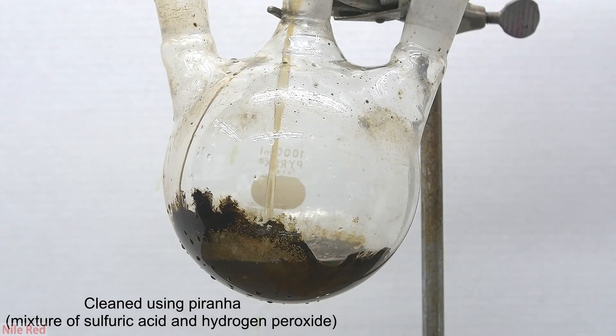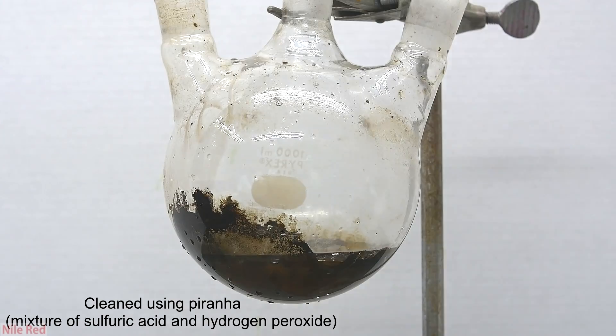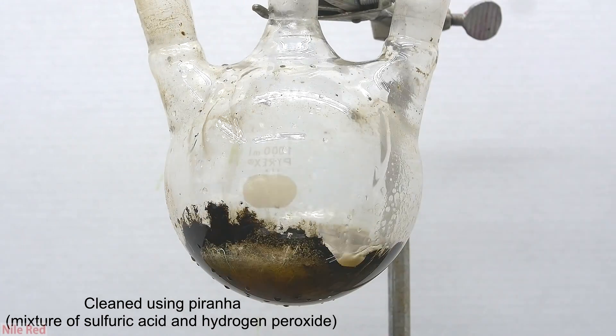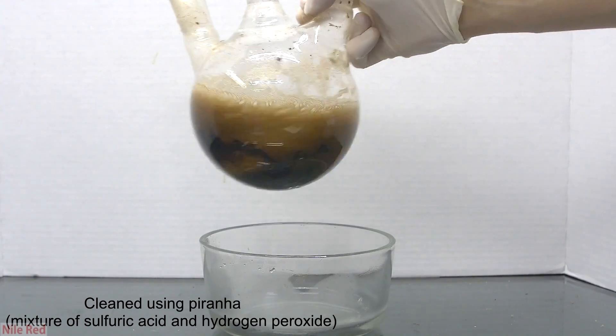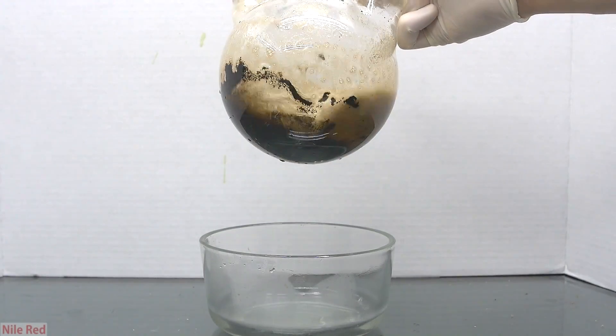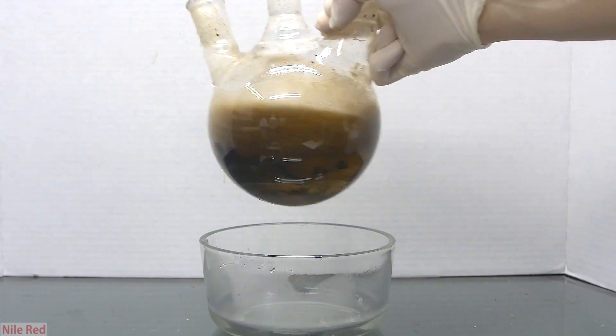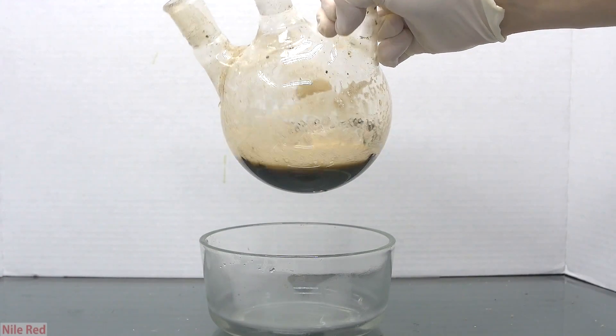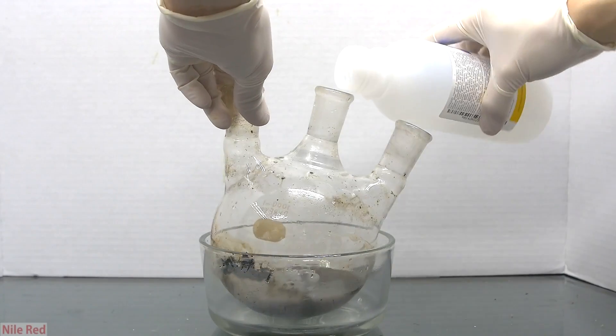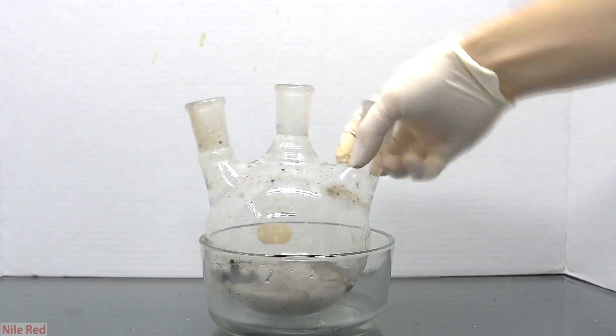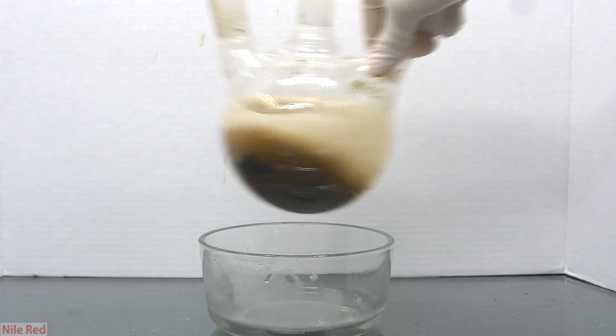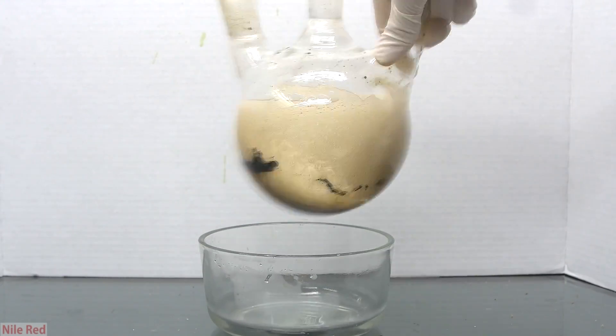To get rid of this, I decided that I would use piranha solution. By mixing sulfuric acid drain cleaner and 35% hydrogen peroxide, we make a very strongly oxidizing solution, which should destroy almost all organic material. After swirling it around for a little bit, and occasionally adding a little bit of peroxide, I was able to get rid of the majority of the black stuff.